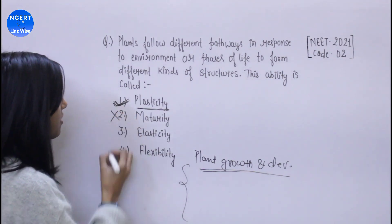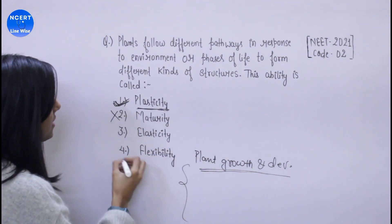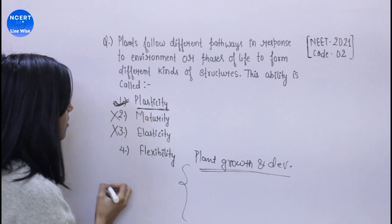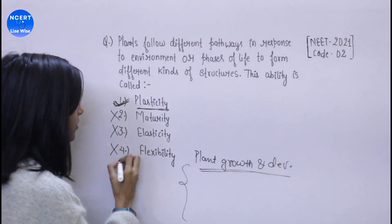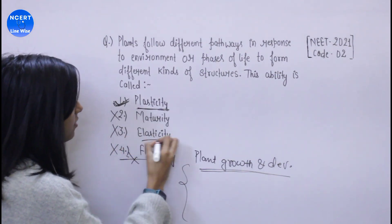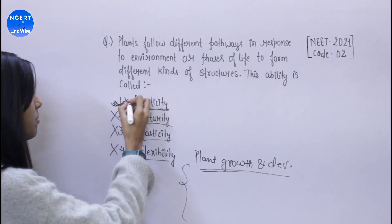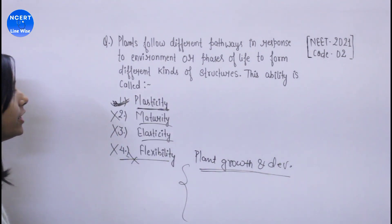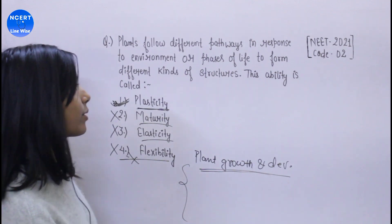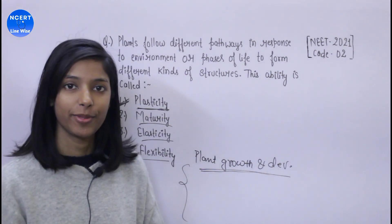Maturity will not be the answer. Elasticity and flexibility are also wrong. The first option is correct. This is from NEET 2021.